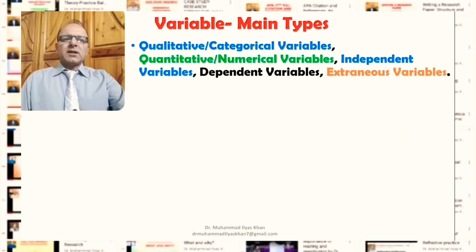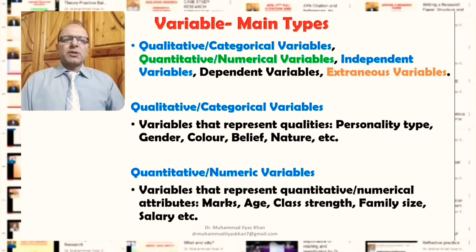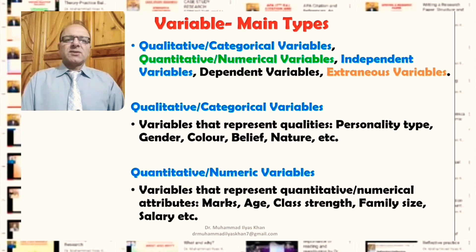There are certain types of variables, and here we are restricting ourselves to the main types. Generally, variables have been categorized in several ways. The main types include qualitative or categorical variables, quantitative or numerical variables, independent variables, dependent variables, and extraneous variables.